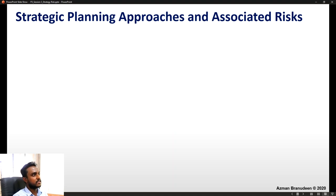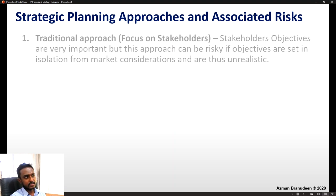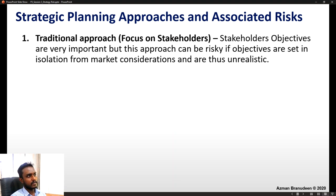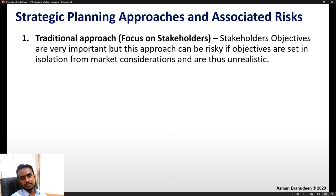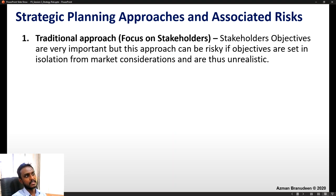Now let us look at the various strategic planning approaches learned in E3 and their associated risks. There are fundamentally two or three approaches — here we will look at three. Number one is the traditional approach, where the focus is on stakeholders. Stakeholder objectives are very important, but this approach can be risky if objectives are set in isolation from market considerations and are thus unrealistic.